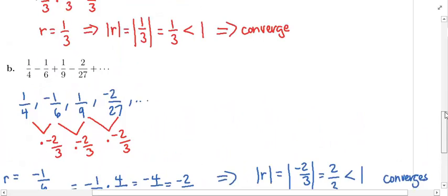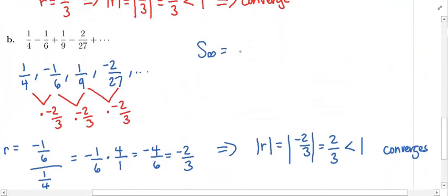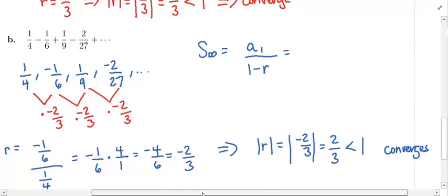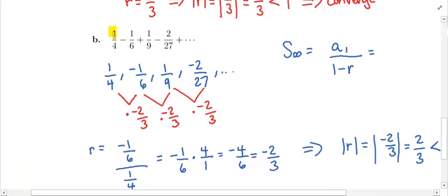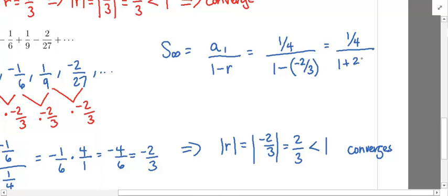To add it up, we apply the formula in the box: S∞ = A1 over 1 minus R. The first term of this sequence is 1/4, so A1 is 1/4. We plug in: A1 is 1/4, divided by 1 minus the R value. The R value is negative, so we pop in negative 2/3.